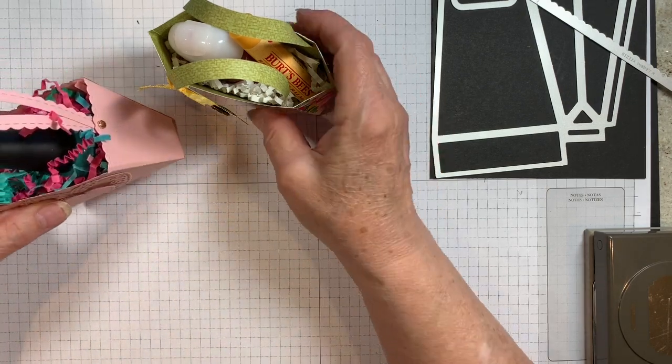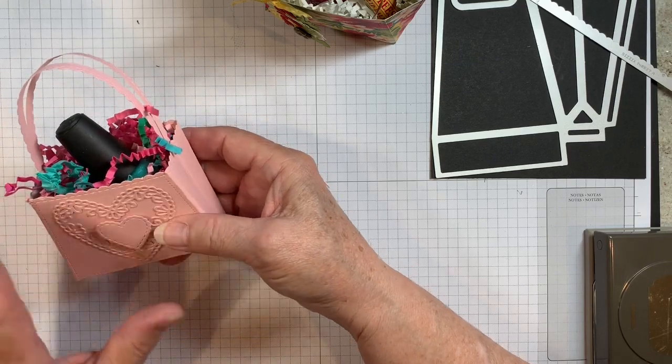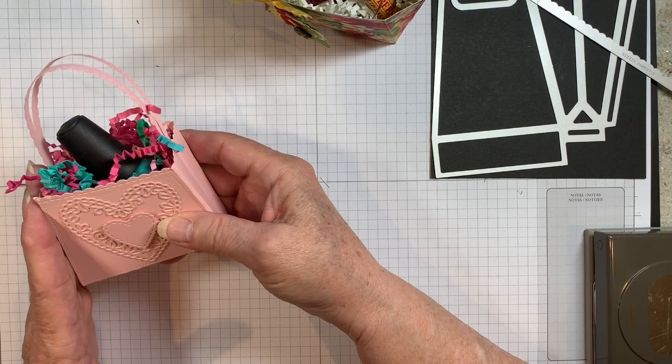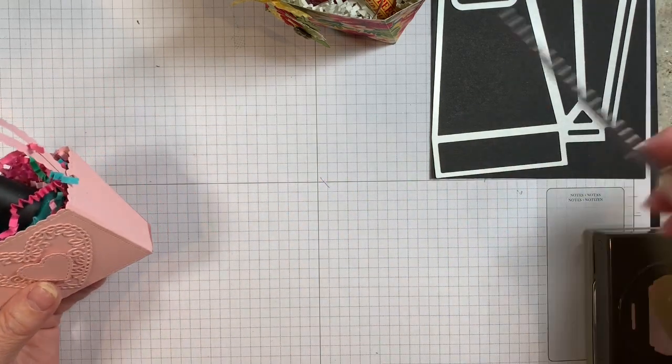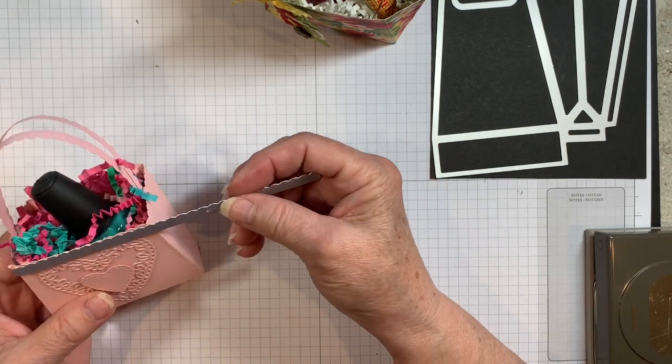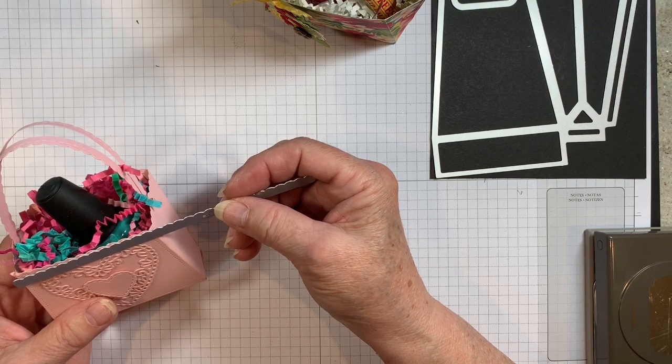So first I'll tell you how we did the heart one. I cut two of the pink paper out and then I took the scallop edge and laid it on there and ran it through the Big Shot again. So I got my scallop on that.